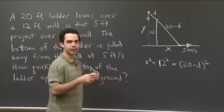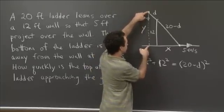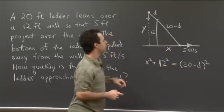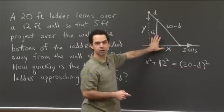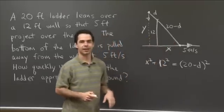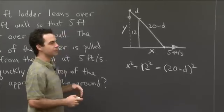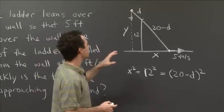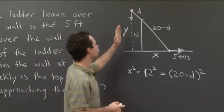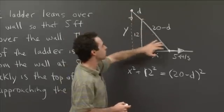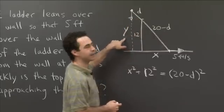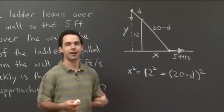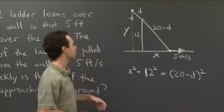By similar triangles, the ratio of the hypotenuses equals the ratio of the corresponding legs. The big hypotenuse has length 20 and the small hypotenuse has length 20 minus d. So: 20 / (20 − d) = y / 12. That sets up a relationship between d and y. So x is linked to d, and d is linked to y, and we can use related rates to find the rate of change of y.